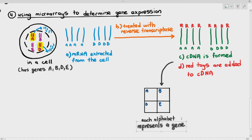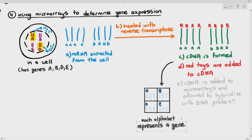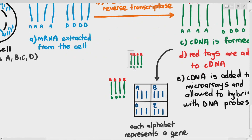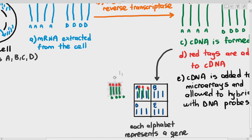We take the mRNAs from genes A and genes D out of the cell and treat them with reverse transcriptase to get cDNAs. We add red color tags to the cDNAs, then add them to the microarray and allow hybridization with the DNA probes. The cDNAs from gene A hybridize with probes at position A, and cDNAs from gene D hybridize with probes at position D.